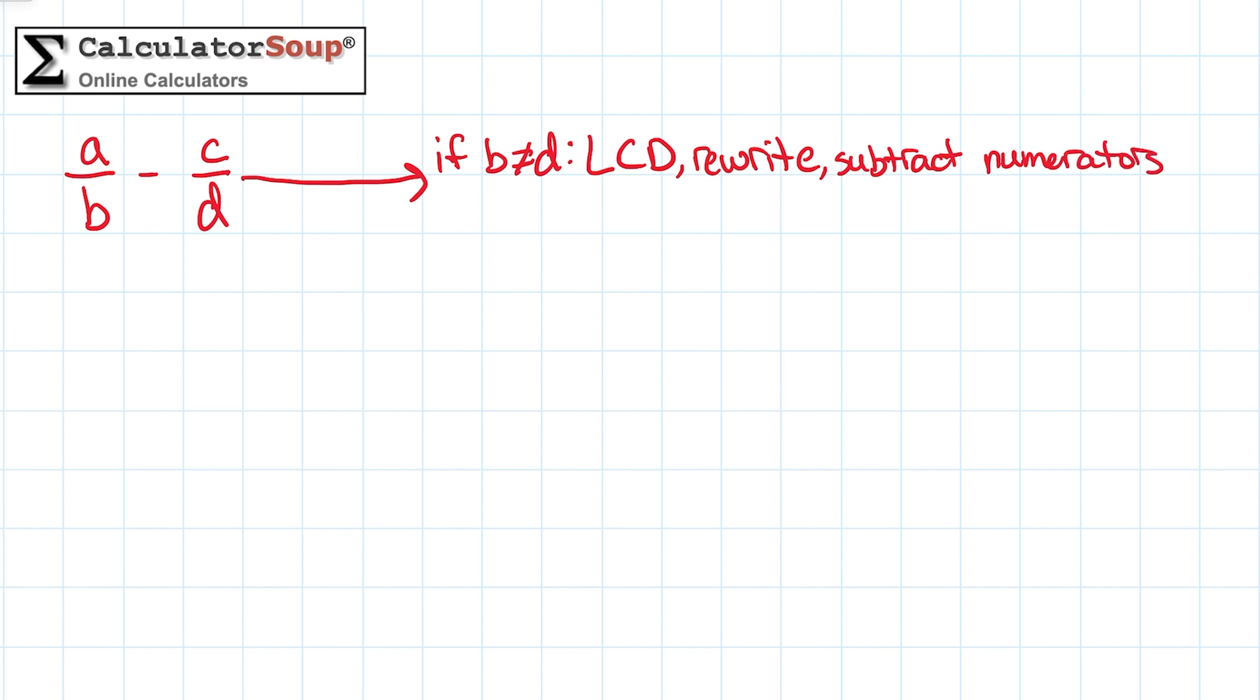Finally, simplify the answer after subtracting the fractions if needed. Let's do some examples. We'll follow these steps to find the difference of two fractions with unlike denominators.